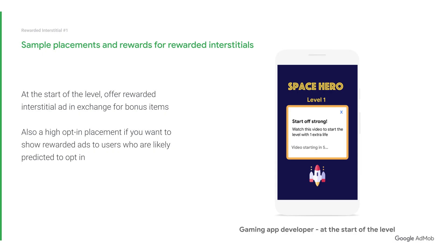Let's take a look at some specific examples of how to implement this new format. If you're a gaming app developer, consider positioning rewarded interstitial ads as just-in-time rewards. Just-in-time rewards can be placed at the start or end of a level to offer a boost or an extra try. You could also use them at strategic breaks in gameplay, as long as they are well-designed and do not disrupt the player experience. At the start of the level, you can choose to offer a rewarded interstitial ad in exchange for bonus items, giving players an opportunity to start the level with an extra boost.